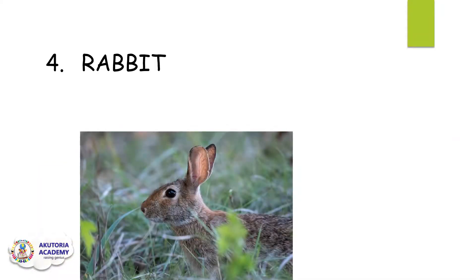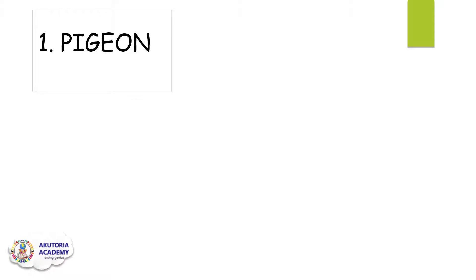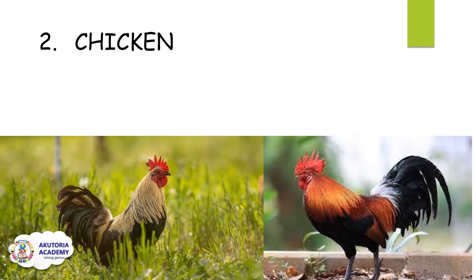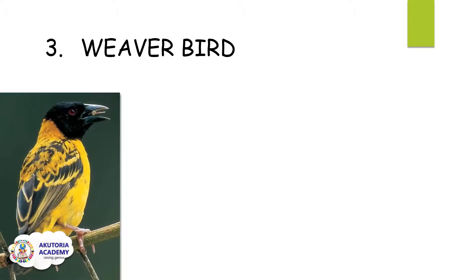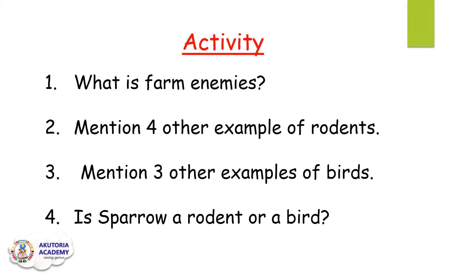Number four, rabbit. Another type of farm enemy is birds. Examples of that are: number one, pigeon; number two, chicken; number three, riverbed; number four, squirrel.